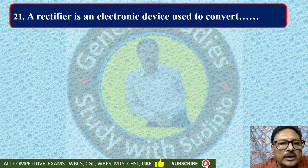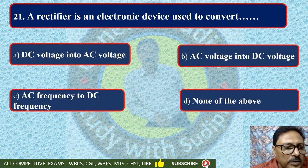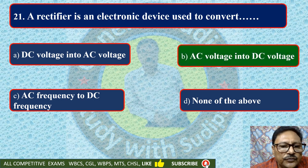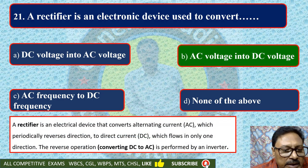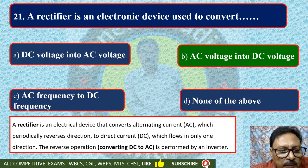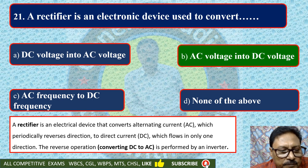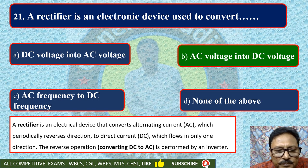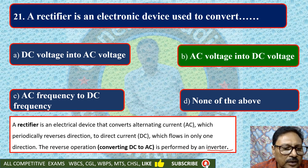A rectifier is an electronic device used to convert — DC voltage to AC voltage, AC voltage to DC voltage, AC frequency to DC frequency, or none of the above. The rectifier converts AC voltage to DC voltage. A rectifier is an electrical device that converts alternating current, which periodically reverses direction, to direct current, which flows in only one direction. The reverse operation, converting DC to AC, is performed by an inverter.